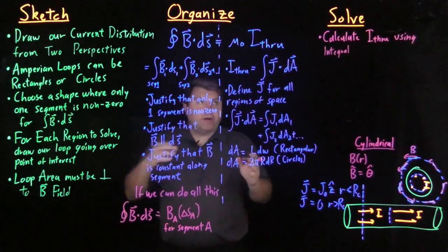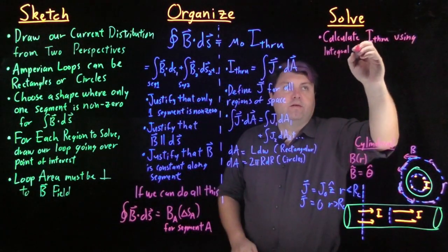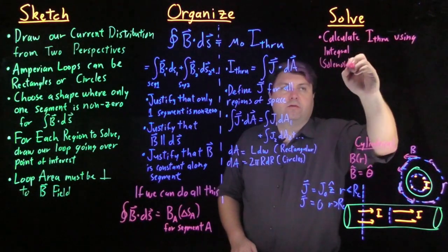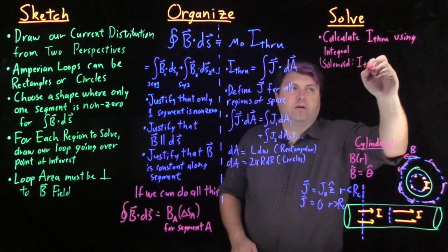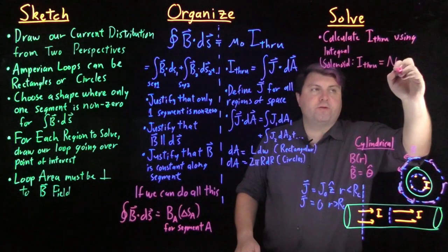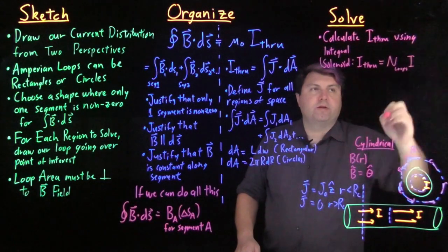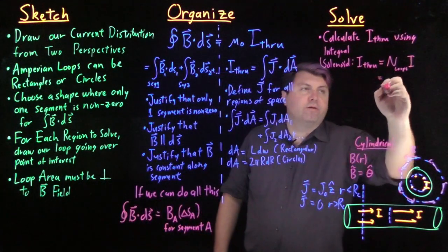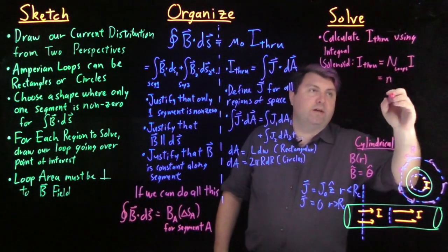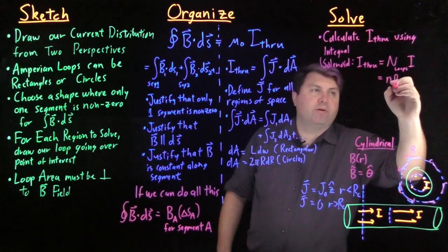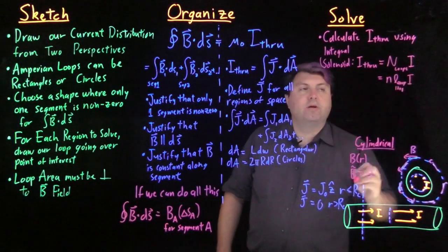If it's a solenoid, then our I through is equal to the number of loops times the current, and then we can talk about then equal to the current density times the L of our loop, of our Amperian loop, times the current.